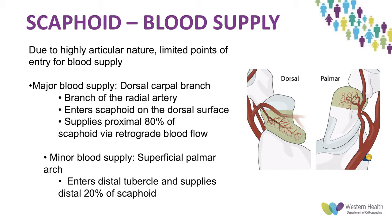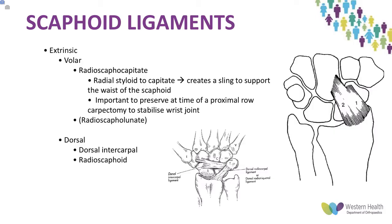There is also a minor blood supply from the superficial palmar arch, a branch of the volar radial artery, which enters the distal pole and supplies only the distal 20% of the scaphoid. The scaphoid has extrinsic as well as intrinsic ligaments. On the volar aspect, the radioscaphocapitate ligament runs from the radial styloid to the capitate, creating a sling to support the waist. It's important to preserve this ligament during proximal row carpectomy. There are also dorsal intercarpal and radioscaphoid ligaments on the dorsal side.